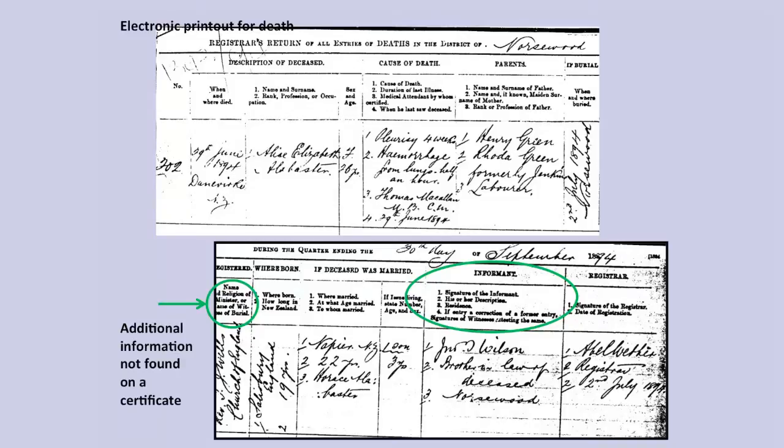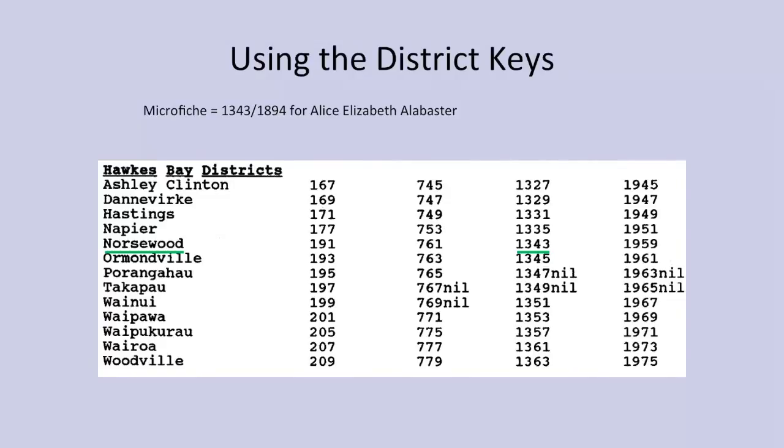This is a death electronic printout with additional information: the name of the religion and minister, the witness of the burial, and the informant. Interestingly, the informant was Alice's brother-in-law and he didn't really know where she was born — she was actually born in Tollard Royal, a couple of hundred miles from the Salisbury he stated, though at least still in the same county of Wiltshire. Using the district keys, we look for microfiche number 1343 in 1894 and find the death occurred in Norsewood.